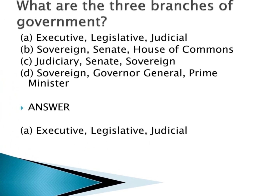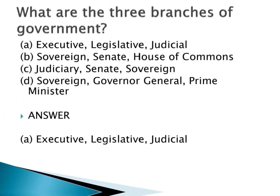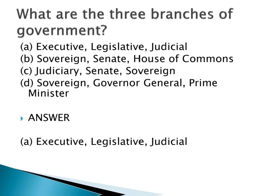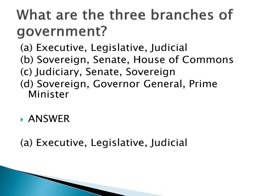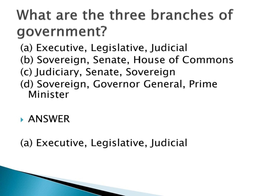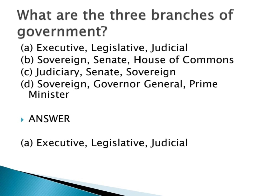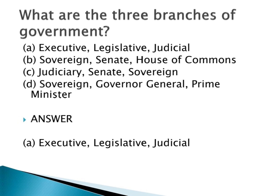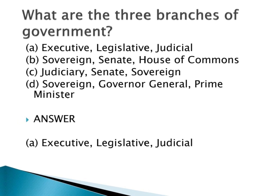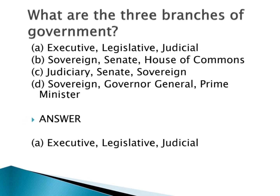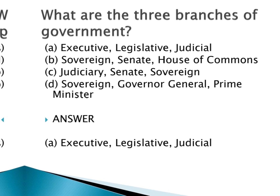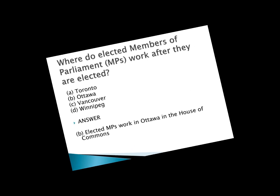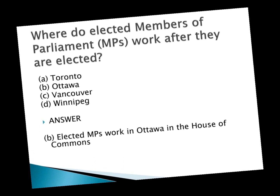What are the three branches of government? a. Executive, Legislative, Judicial. b. Sovereign, Senate, House of Commons. c. Judiciary, Senate, Sovereign. d. Sovereign, Governor-General, Prime Minister. Answer: a. Executive, Legislative, Judicial.